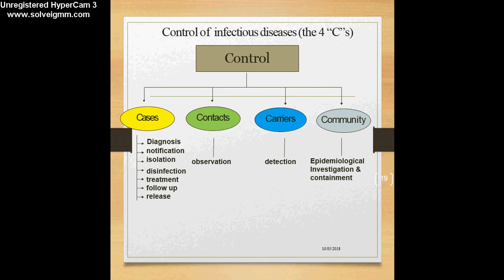To achieve control of cases, we need to diagnose the case, notify the case to appropriate health authorities, isolate the case if necessary, perform disinfection — for example, disinfecting secretions of a tuberculosis patient — treat the case, then follow up and release. For contacts, they have to be observed for development of symptoms; if contacts develop symptoms, they automatically become cases. For carriers, it is very important to detect and treat them so that they do not become reservoirs.